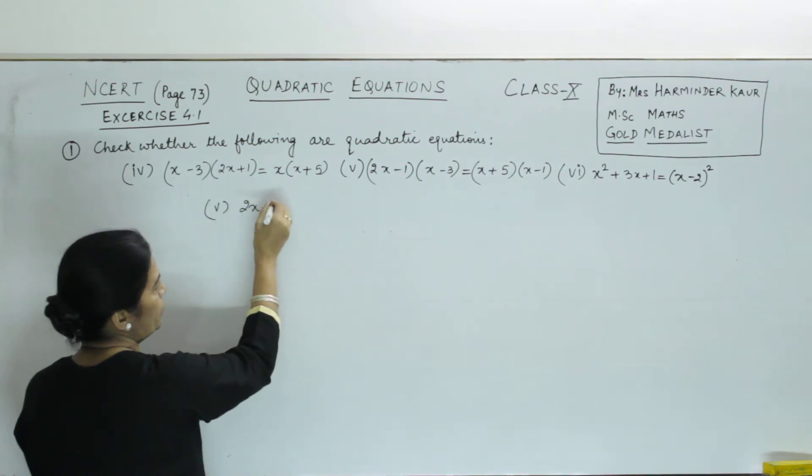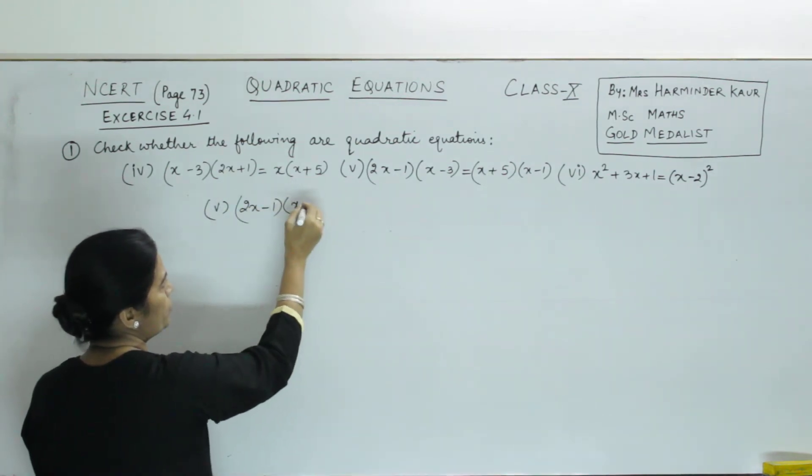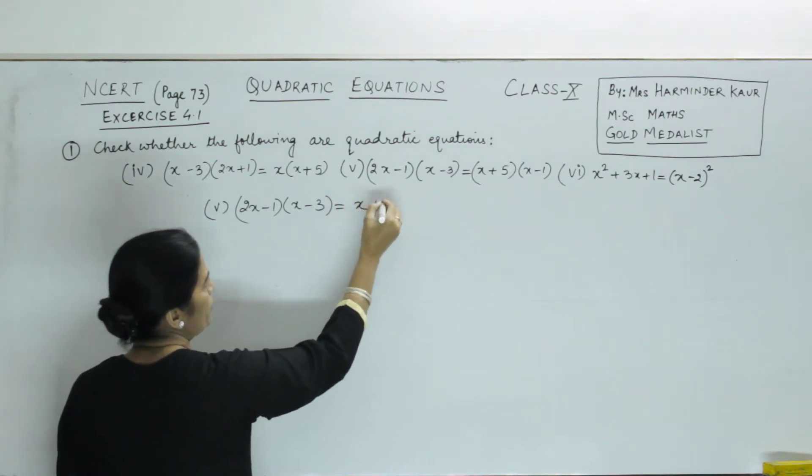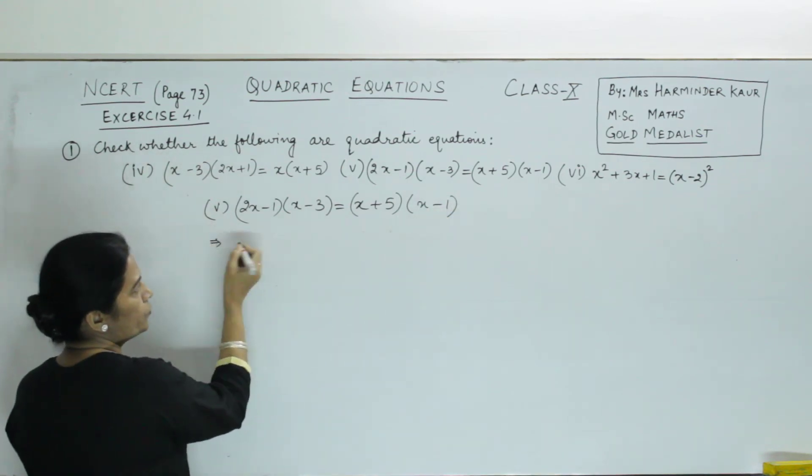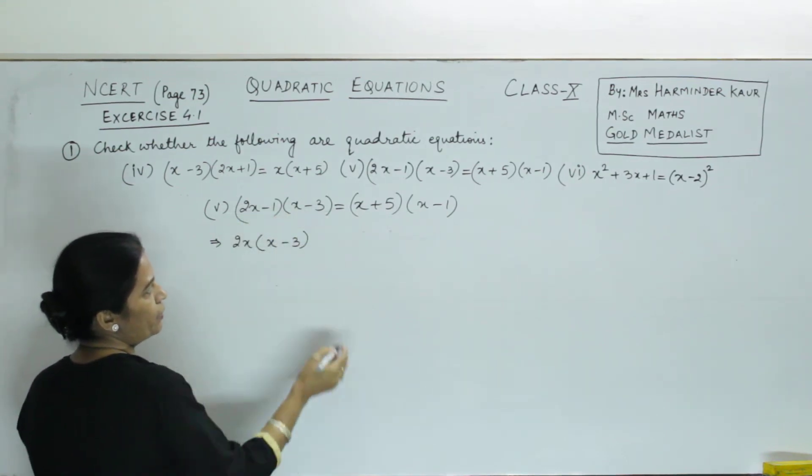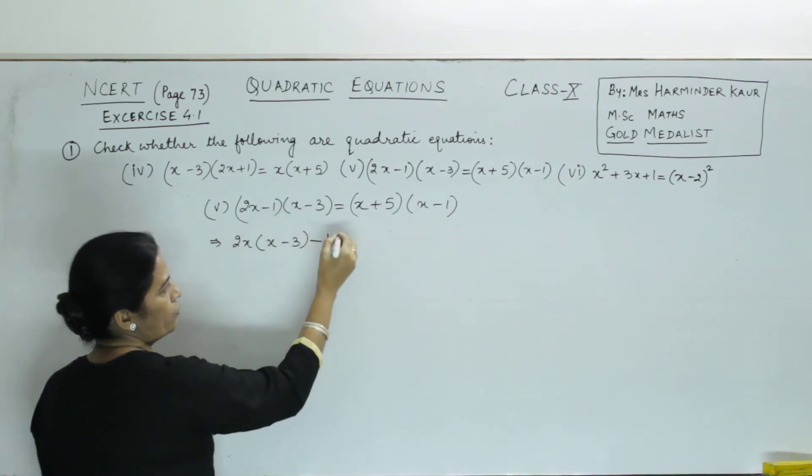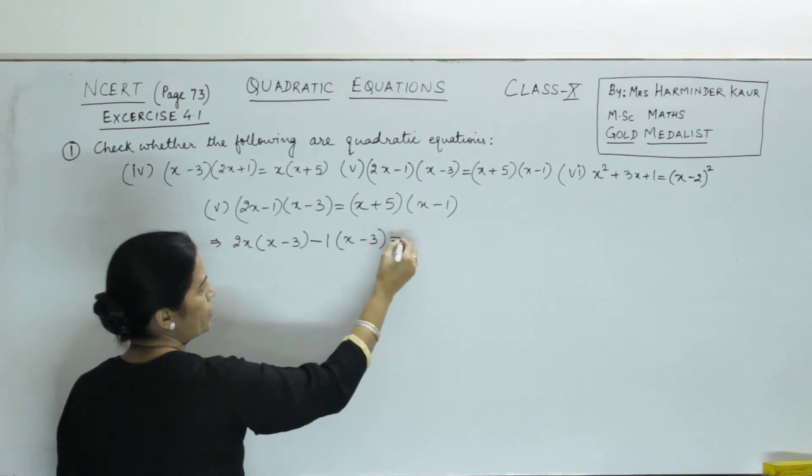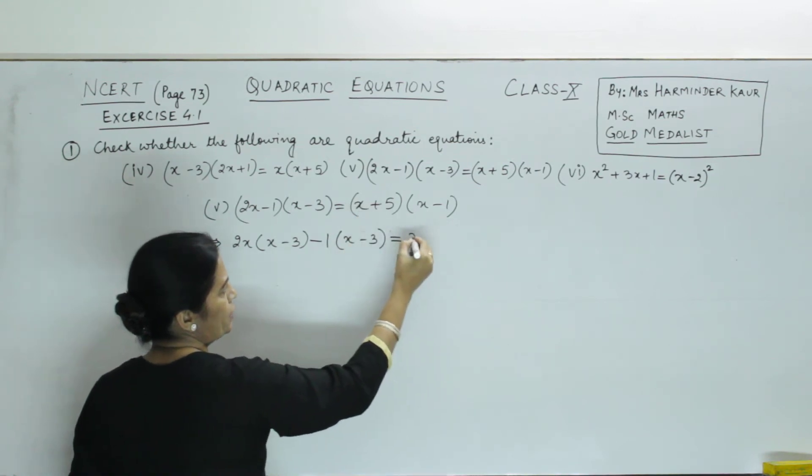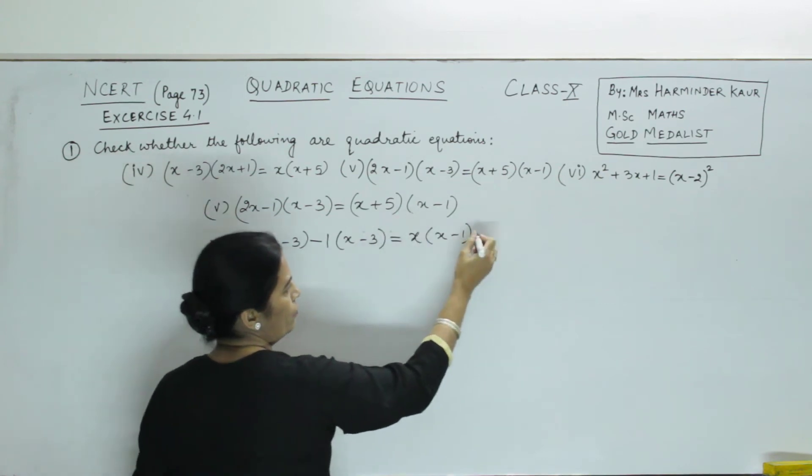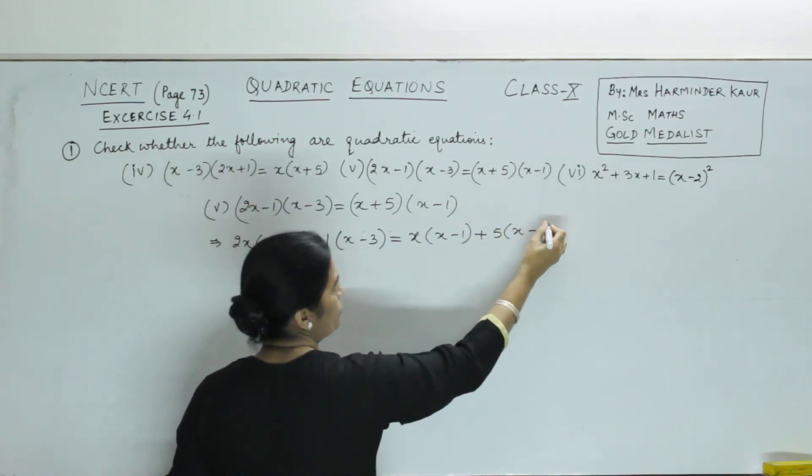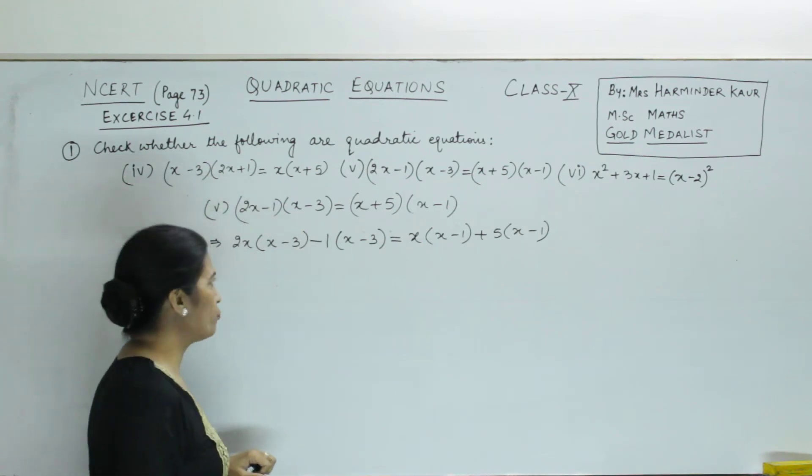So, now, we take the fifth part. So, it is (2x-1)(x-3) = (x+5)(x-1). So, we open the bracket. It is 2x into (x-3). This is 2x multiplied with this bracket. Then, minus 1 is multiplied with the second bracket = this x into (x-1). x with this bracket. Then, plus 5 into (x-1).